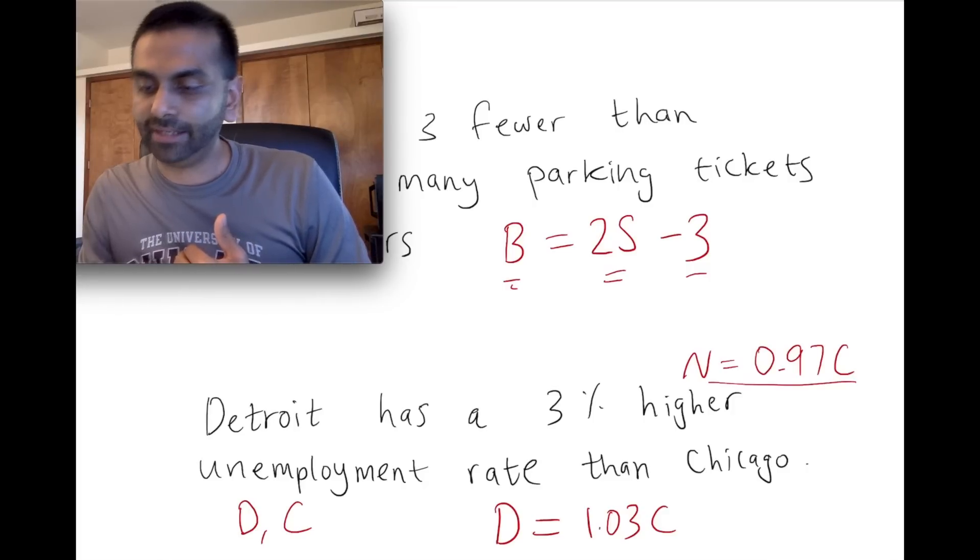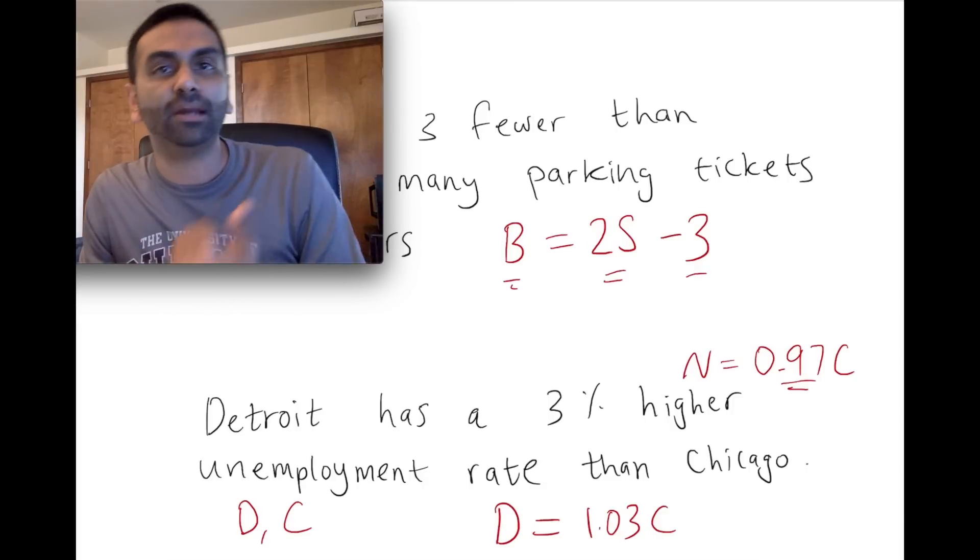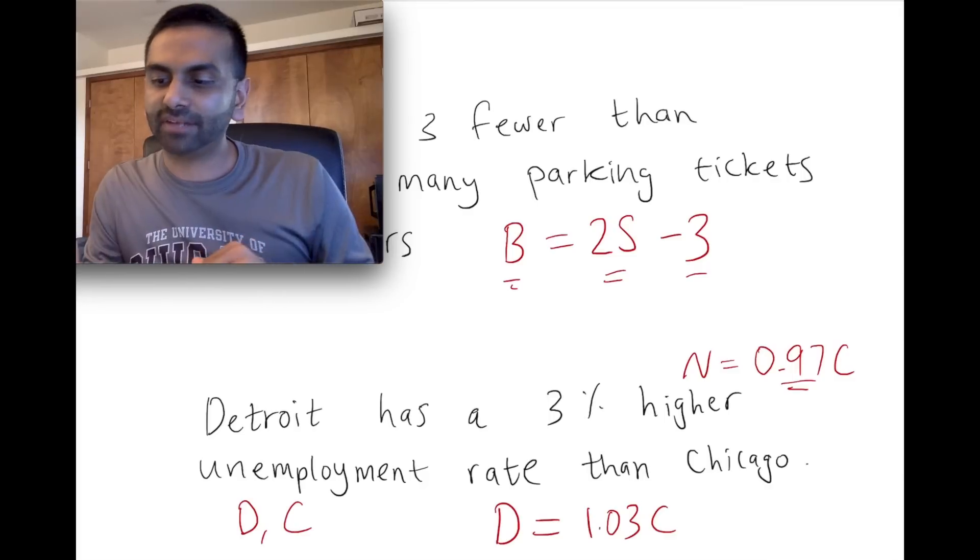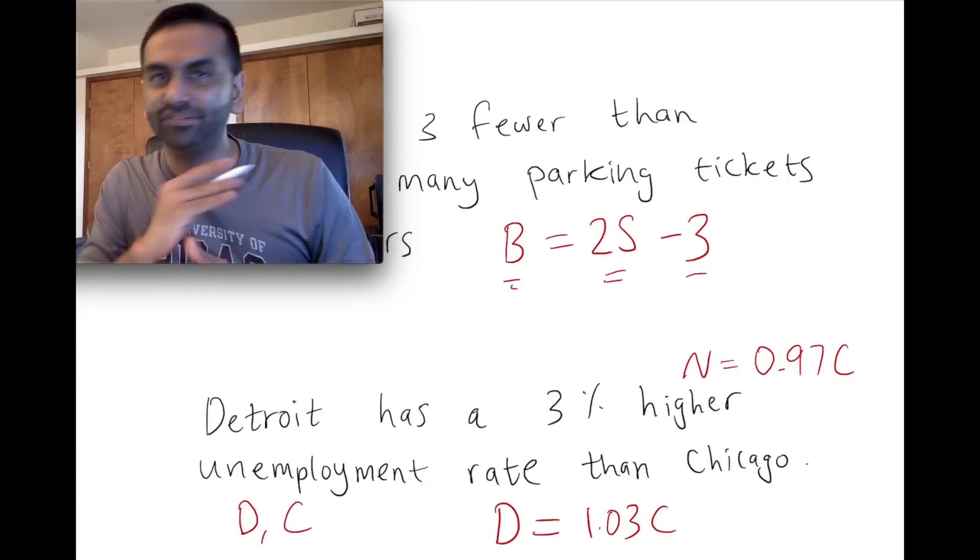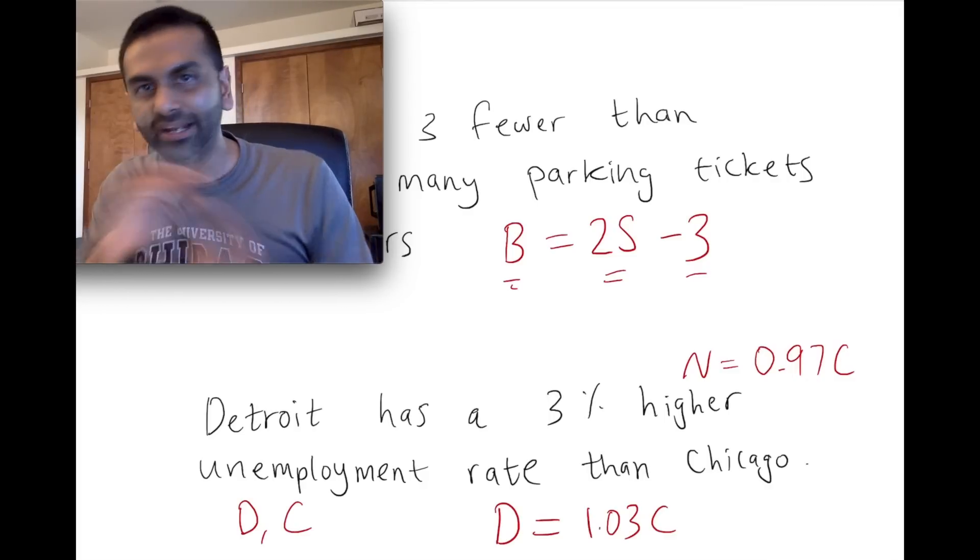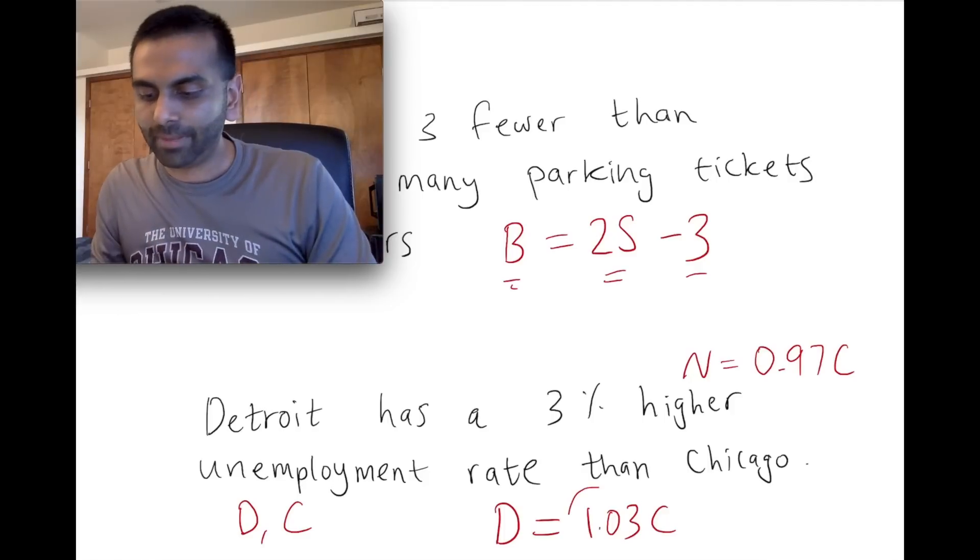times Chicago. And again here, in the end, New York's going to be less than Chicago because it's Chicago times a number less than one. So that's how you deal with translating percentages—the sentence in English with a percentage you can translate into math by using one plus r or one minus r times the variable.